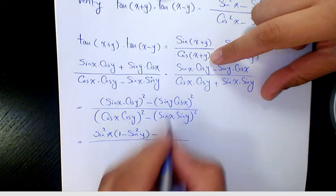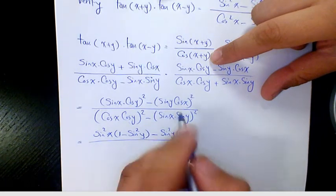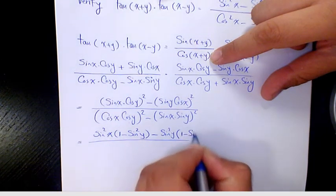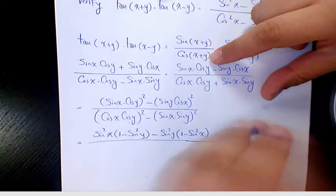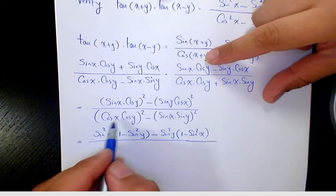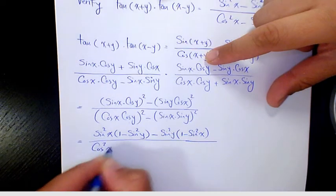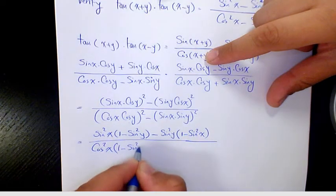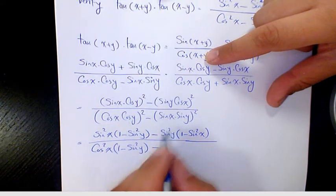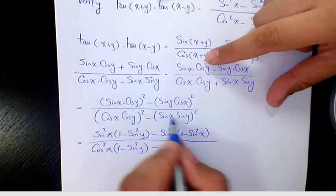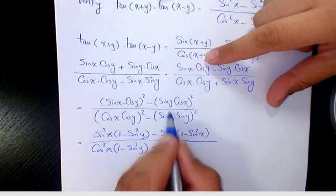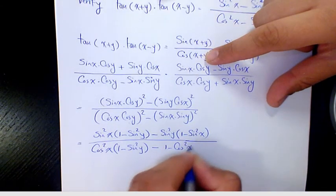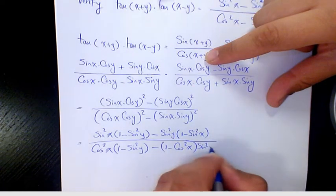Minus here we have sine squared(y), and instead of cosine squared(x) I'm going to write one minus sine squared(x), because sine squared plus cosine squared equals one. And in the denominator, instead of cosine squared(y) I write one minus sine squared(y), and instead of sine squared(x) I write one minus cosine squared(x), times sine squared(y).